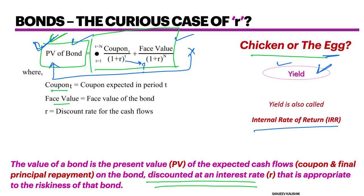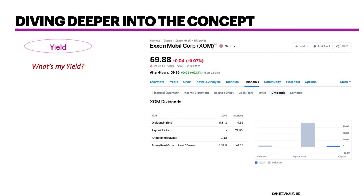Yield is also called internal rate of return, which is nothing but a fancy name to express the return one would generate when buying a bond at a certain price. I want to dive a little deeper into yield using a stock example, because this is a series for stock traders and investors so they become more informed in the world of bonds, banks, and their relationship with the stock market.